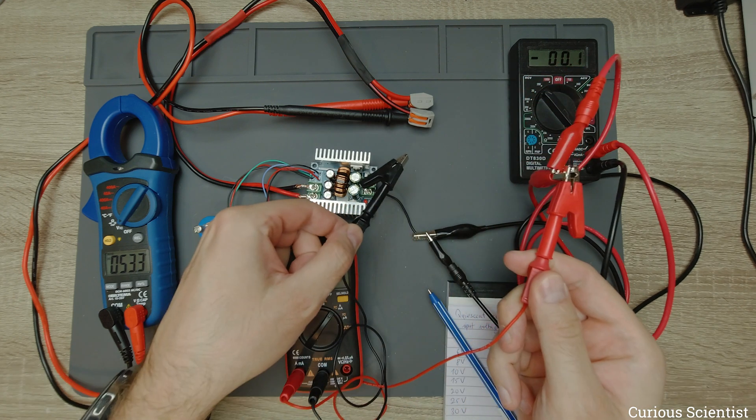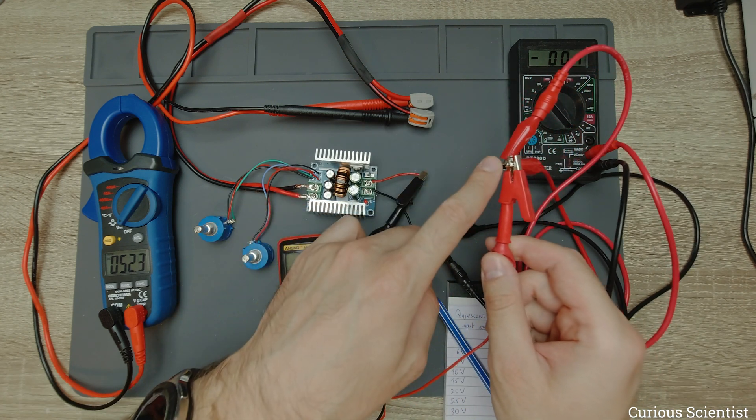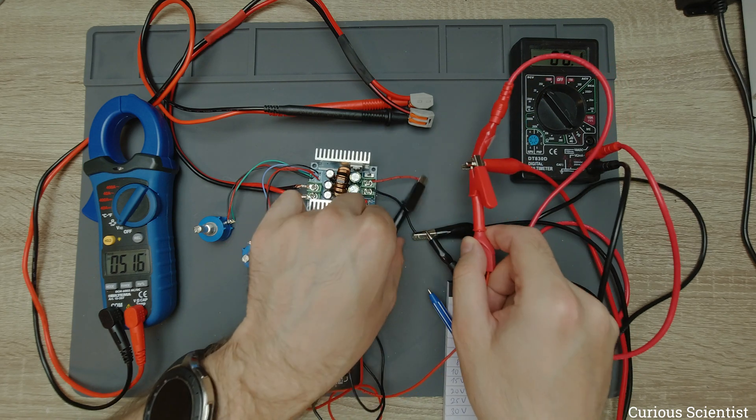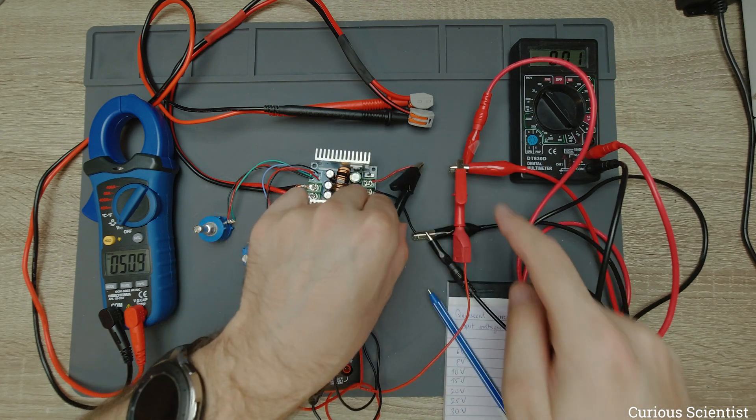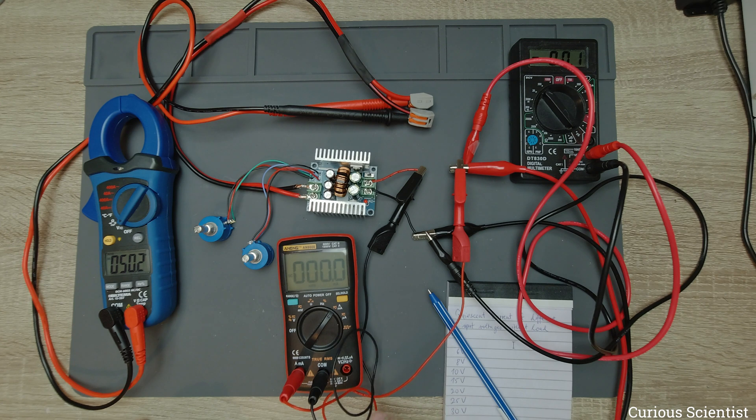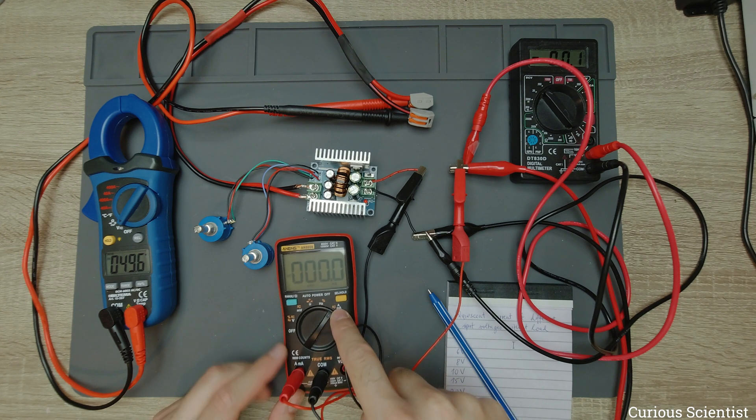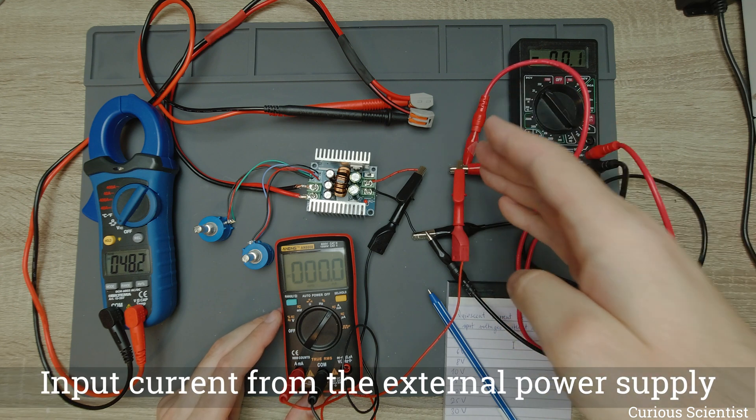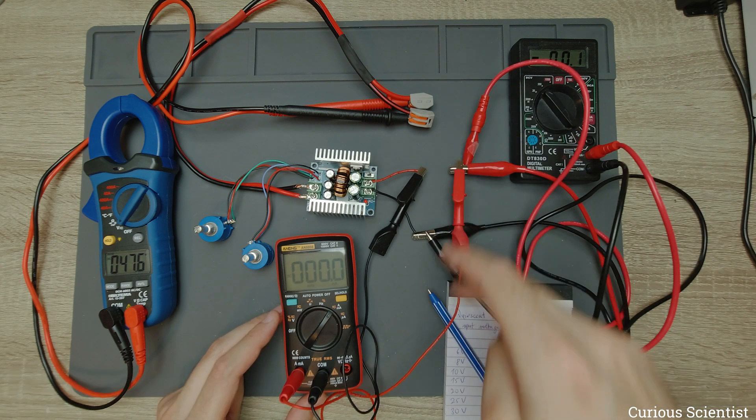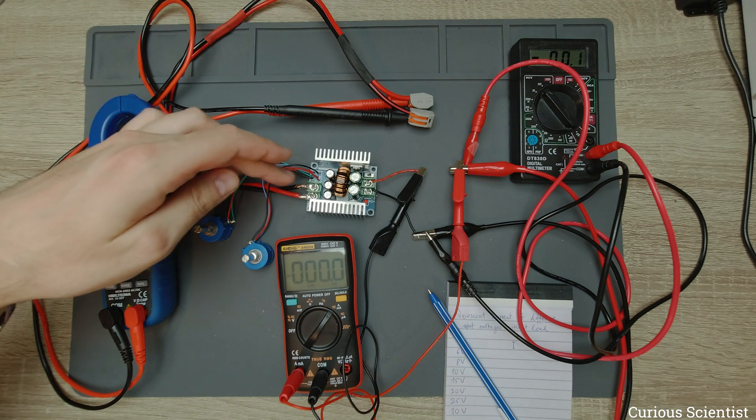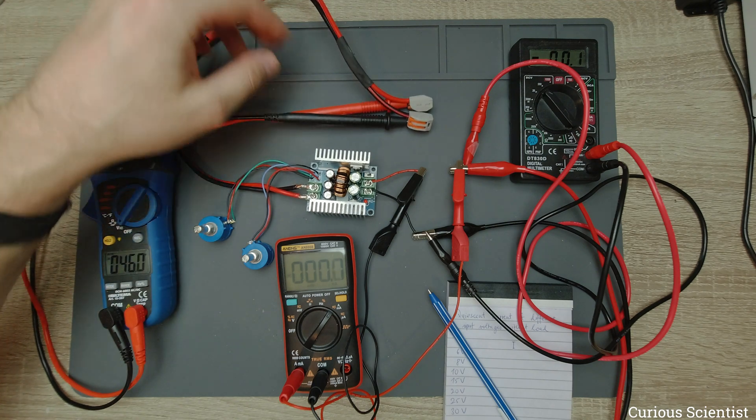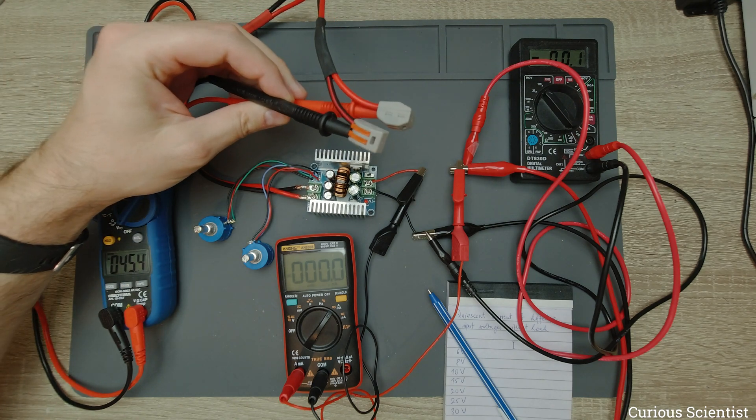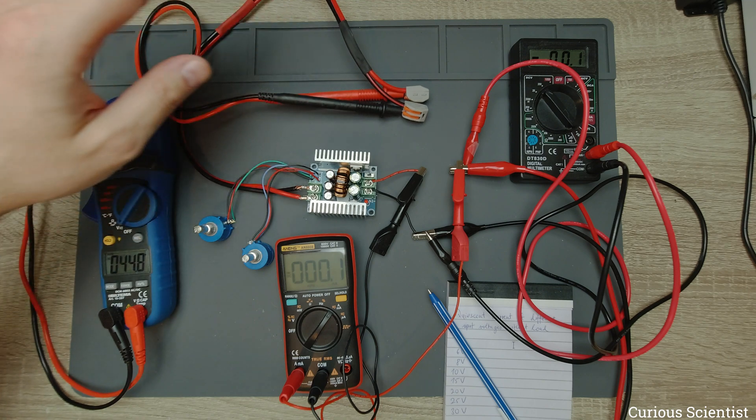As you can see, there is a split between the positive supply voltage and the input, because I run the input current through this other multimeter. So we are measuring the current, the input current, and of course that has to be done in series. Then the output comes out on this very thick wire and it is ending in these clips, and I have nothing else.